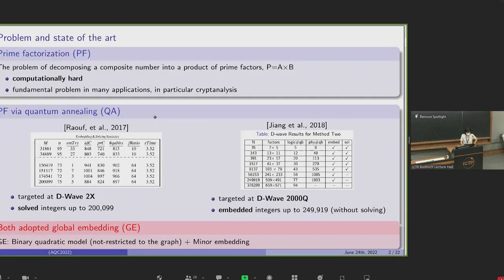So what's prime factorization? It's a problem of decomposing a composite number into a product of prime factors. It is computationally hard and often used in cryptography to design algorithms. So far, no polynomial time classical algorithm is known yet.